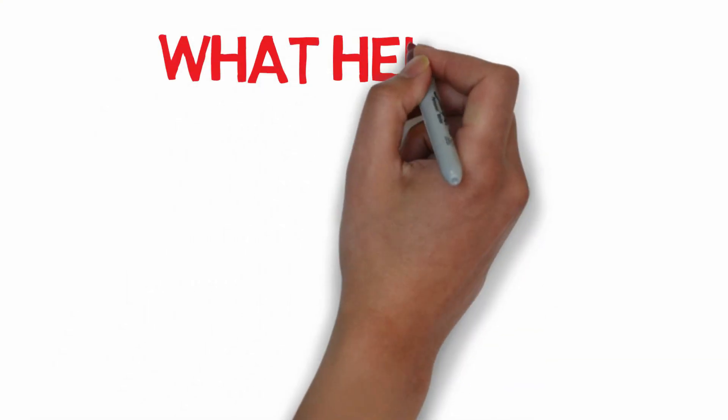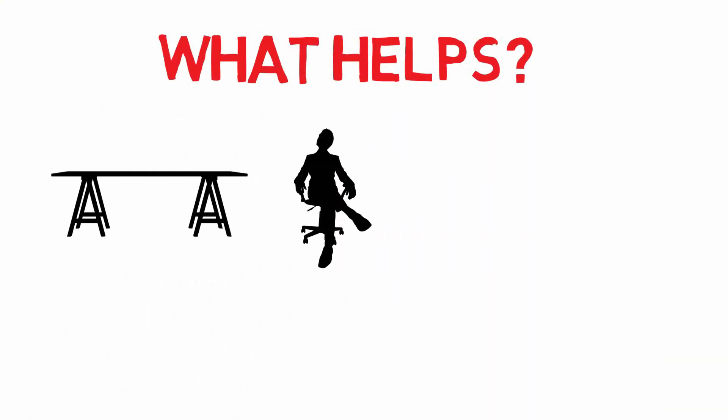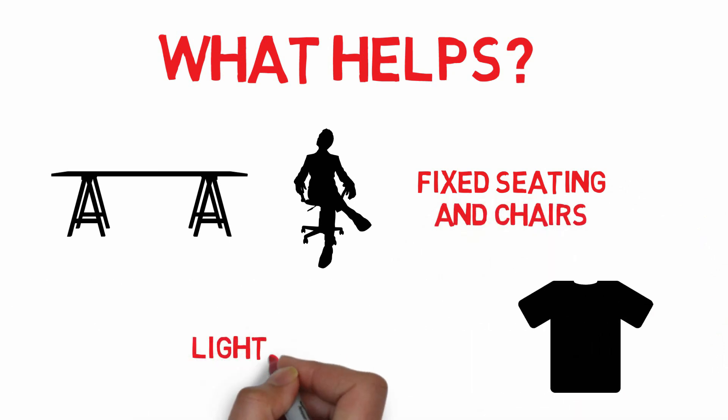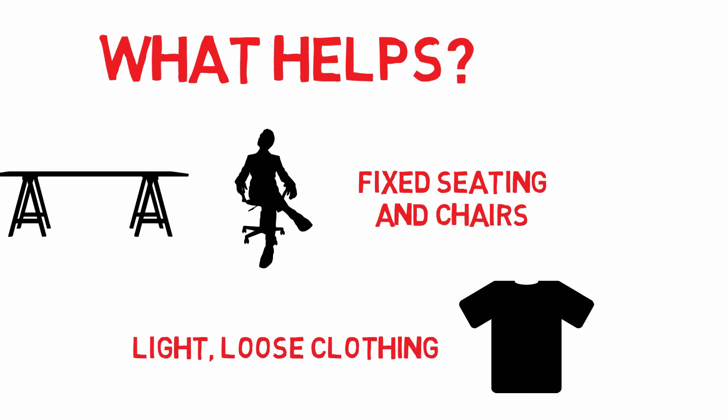What helps? Having fixed chairs and tables can avoid small muscular movements, and having light clothing can help avoid the sensation of weight.